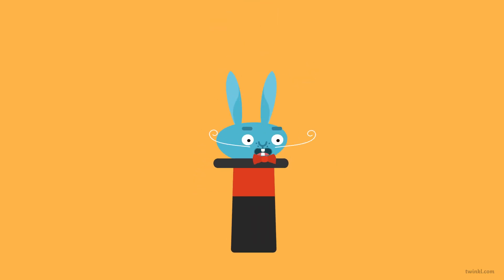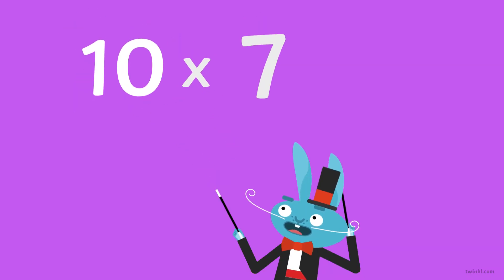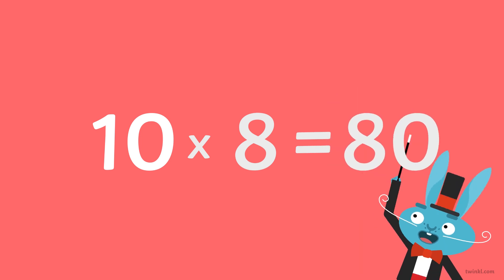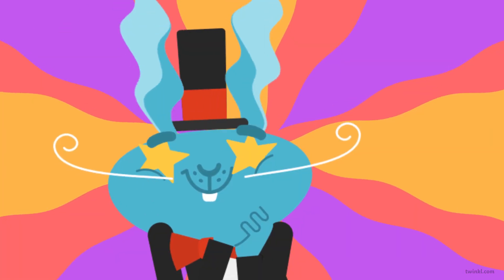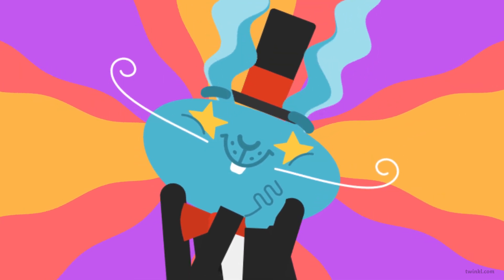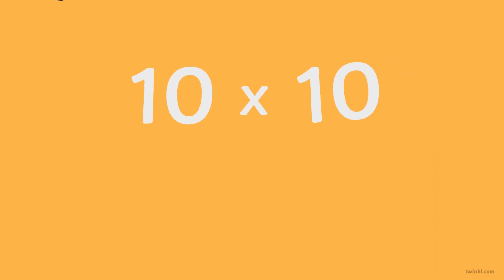Timetables are magic. Ten times seven is seventy, ten times eight is eighty, ten times nine is ninety. Maths is so fantastic.